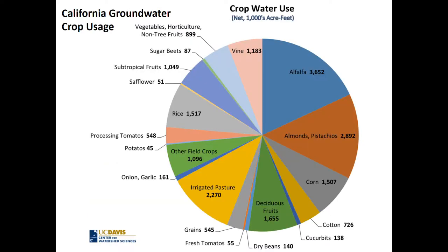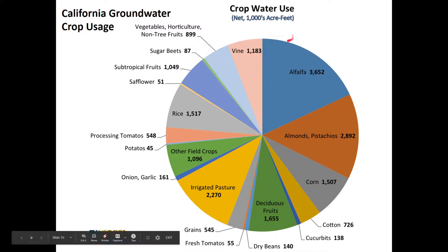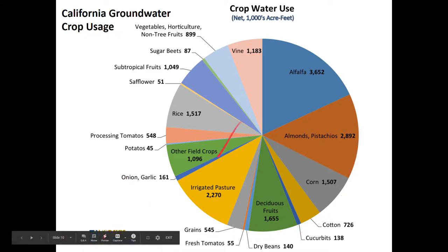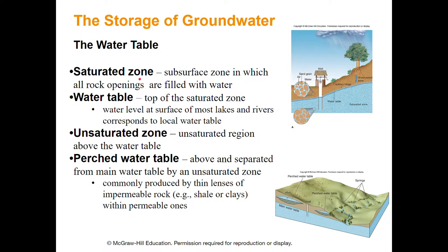I couldn't find this broken up for Arkansas, but I've got a breakdown of California groundwater usage per their different crops. You can see the different crops and what's using so much water in California. Most of it is just alfalfa - that's your hay, basically, that you feed your cattle. Vine is probably grapes for wine. Farming is a big deal and it uses a lot of groundwater.